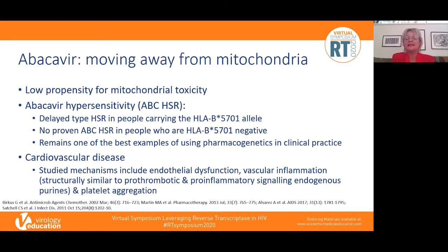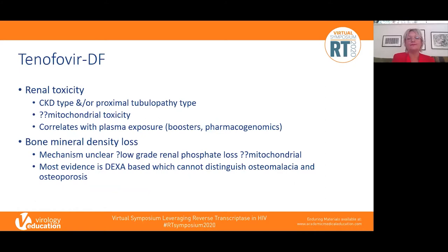Platelet aggregation is also a well-studied mechanism — abacavir makes platelets more sticky by more than one mechanism. Turning to tenofovir DF: the classic toxicity profile includes renal toxicity, either chronic kidney disease or proximal tubulopathy. The mechanism isn't entirely understood — possibly mitochondrial toxicity — and although TDF has low affinity for polymerase gamma, the renal proximal tubule is particularly sensitive to mitochondrial toxicity. Renal toxicity correlates with plasma exposure, as we see more with pharmacokinetic boosters.